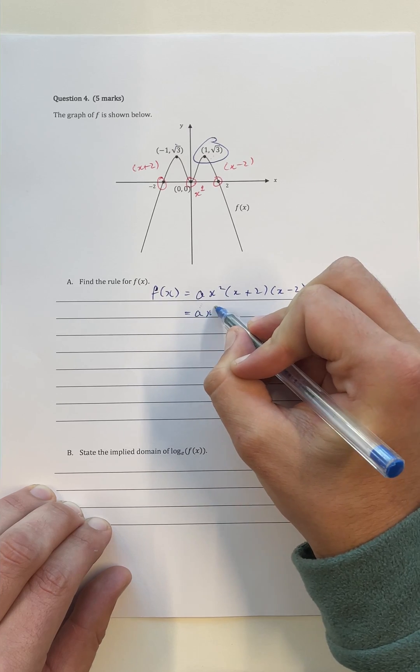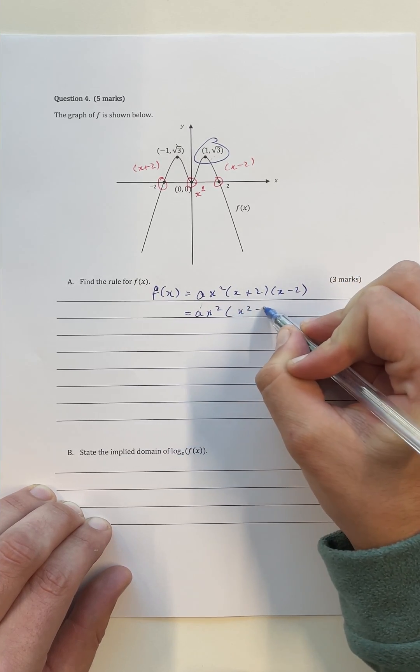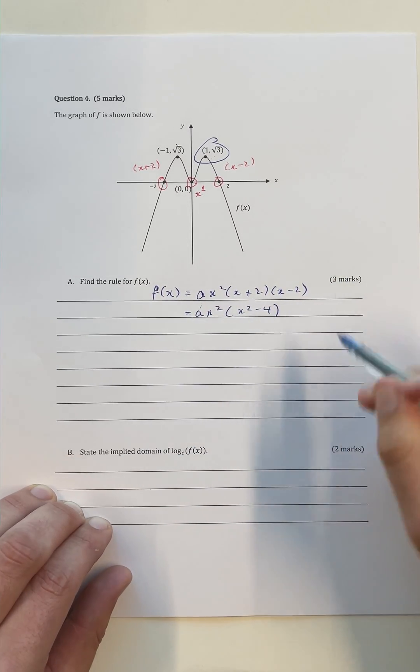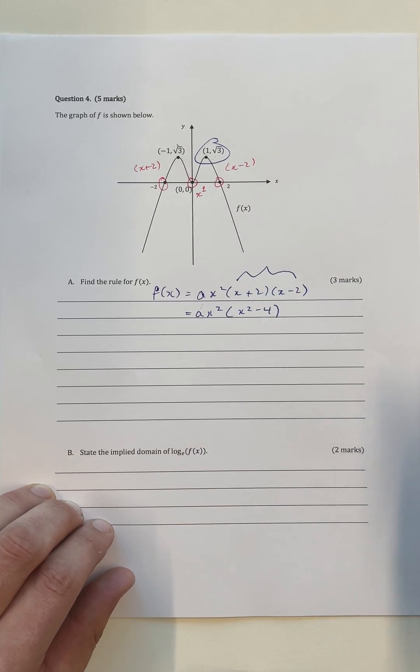Before I do that, I just recognize that a x squared times x squared minus 4 is an equivalent way of representing this, just combining these two factors as a difference of two squares.